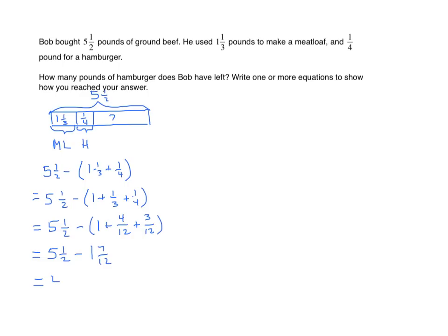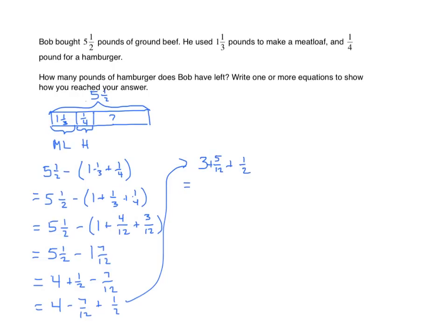So five minus one is four. Now we decompose four and one-half minus seven-twelfths. Seven-twelfths is greater than one-half, so I'm going to have to change the order here. So I have four minus seven-twelfths plus one-half. Four minus seven-twelfths is three and five-twelfths plus one-half. I can easily translate one-half into twelfths by multiplying both the numerator and the denominator by six. We have three and five-twelfths, and one-half becomes six-twelfths. I find the sum, and I get three and eleven-twelfths.